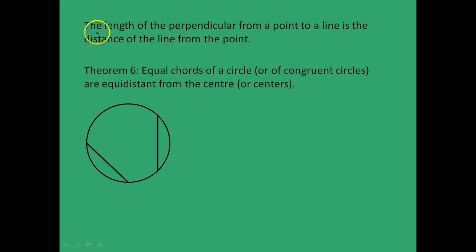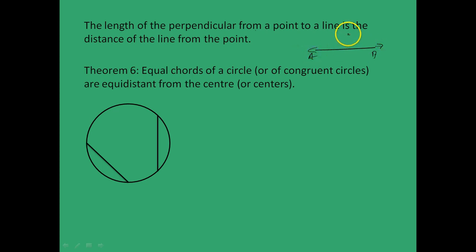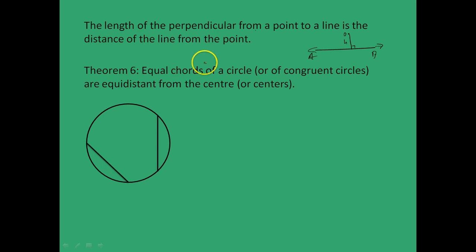First, recall that the length of the perpendicular from a point to a line is called the distance of the line from a point. So if you have a line AB and a point, the length of the perpendicular from that point to O is called the distance of O from AB.